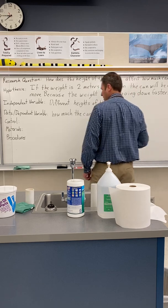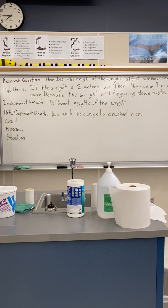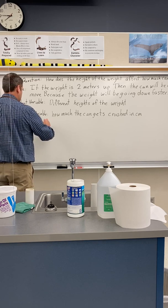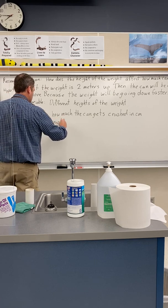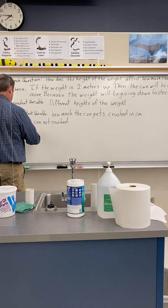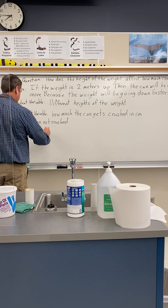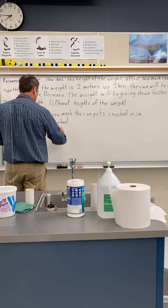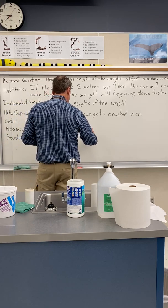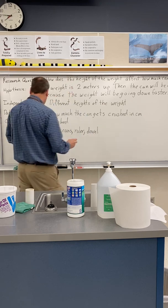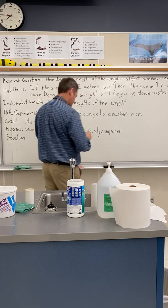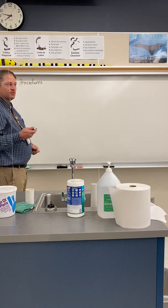The control is our normal test — we define it as the can not being crushed. For materials, we're going to need a sewer pipe, a weight, a ruler, a dowel to hold the weight at different heights, and a computer for recording data.